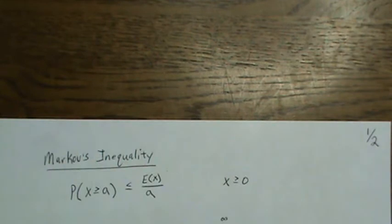First, we'll start off with Markov's inequality, which says the probability of being greater than a value A is less than or equal to the expected value of X divided by A. And here it assumes that X is positive.